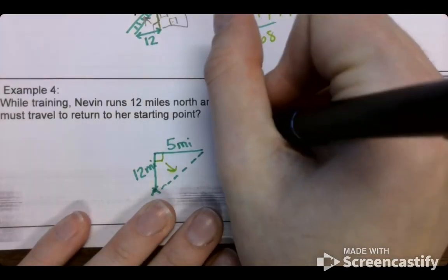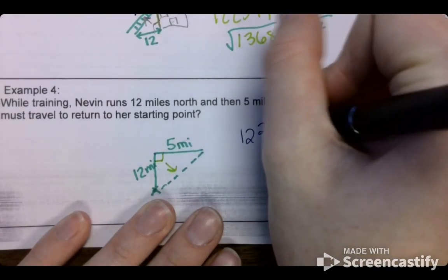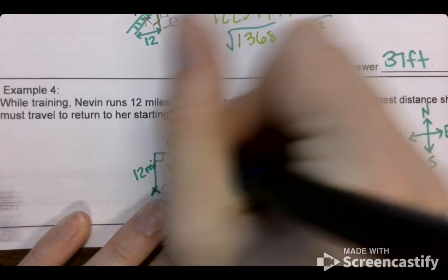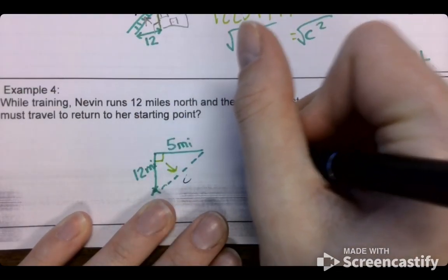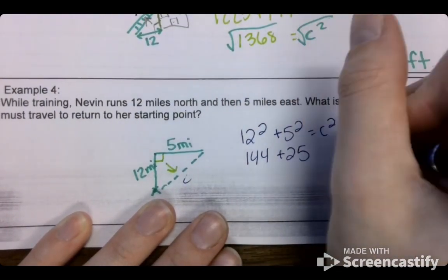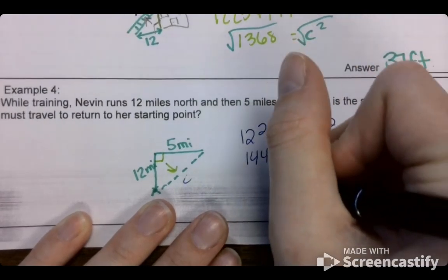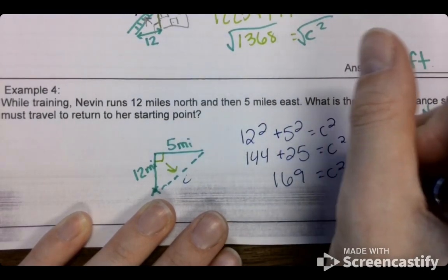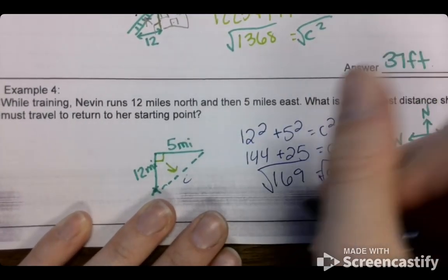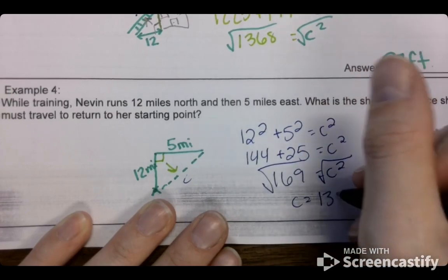Welcome back. We should have had 12 squared plus 5 squared. That should have equaled our C. 144 plus 25. That's 169. Take the square root, and our C should be 13 miles.